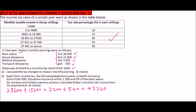Now we calculate the tax for each bracket. The first bracket is charged at ten percent. Ten percent of nine thousand six hundred and eighty shillings equals nine hundred and sixty-eight shillings. That is the tax due for the first bracket.